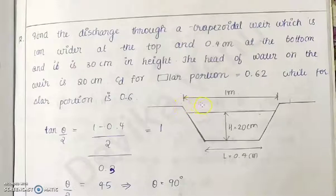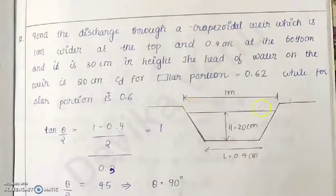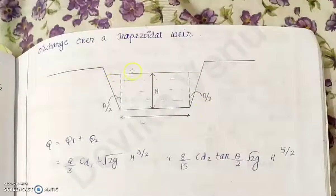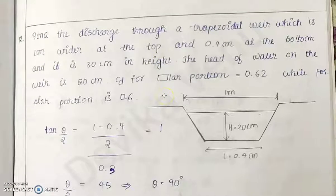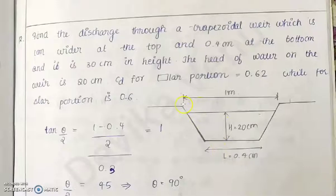The opposite side is this length. To find out tan θ/2, at the side you know the total height is 30 centimeters — from here to here. You know the total width at the top edge. So 1 meter minus 0.4 meter will give you the width on both sides. I have deducted the rectangular portion, so this plus this gives that, and divided by 2 will give you the length of one side. So 1 minus 0.4 by 2 will give you opposite side by adjacent side.